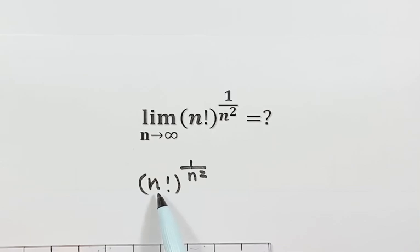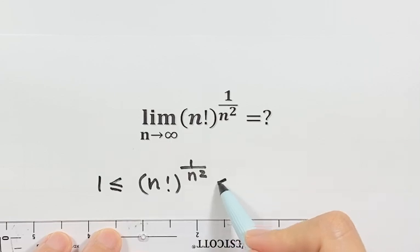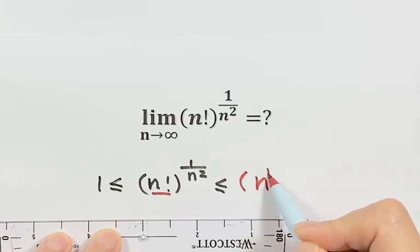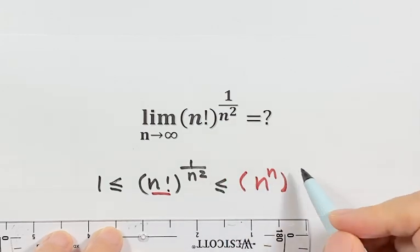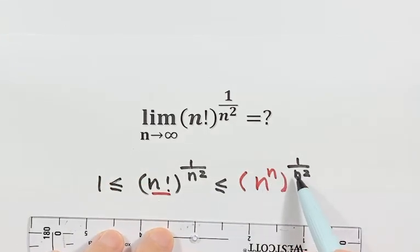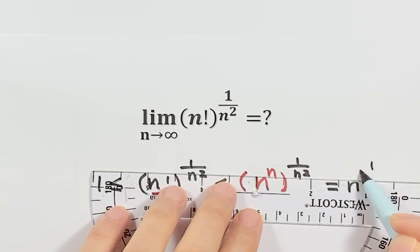Because n is a natural number, n factorial is bigger than or equal to 1, so this whole expression is also bigger than or equal to 1. And also n factorial is less than or equal to n to the nth power, so the whole thing is less than or equal to n to the nth power with the same power of 1 over n squared. Simplifying the power, we have n to the power of 1 over n.